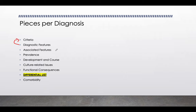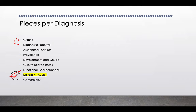You'll also see associated features — other things you can expect with this disorder — prevalence rates, development and course, cultural-related issues, and functional consequences. For some disorders, consequences are obvious, like with alcohol use disorder. But for something like nightmare disorder, it's less clear, and the DSM gives examples of what to ask your client. Really importantly, there's a differential list — a list of all the other things it could be.